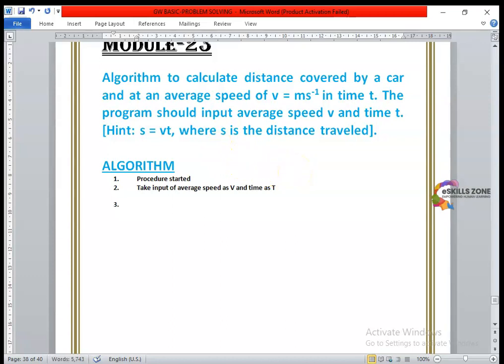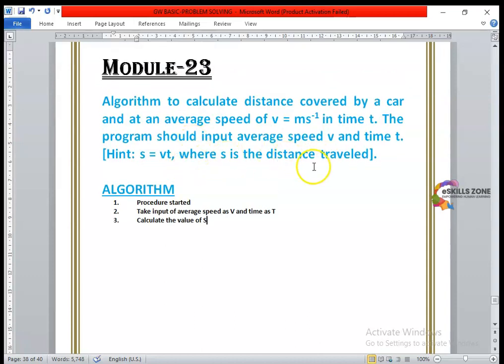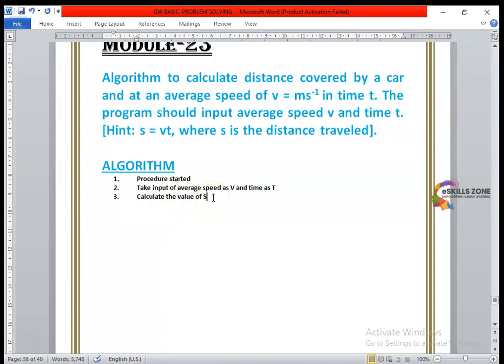These are very important. This is how we are going to multiply these two values and we get the resultant multiplied value of distance. This is how we can get this very simple formula to calculate the distance covered by a car by multiplying the speed into time T.